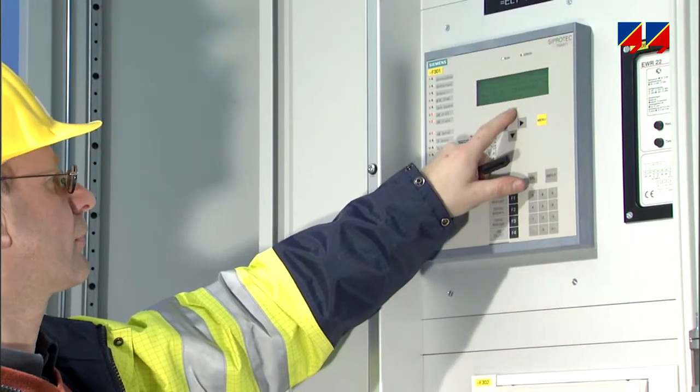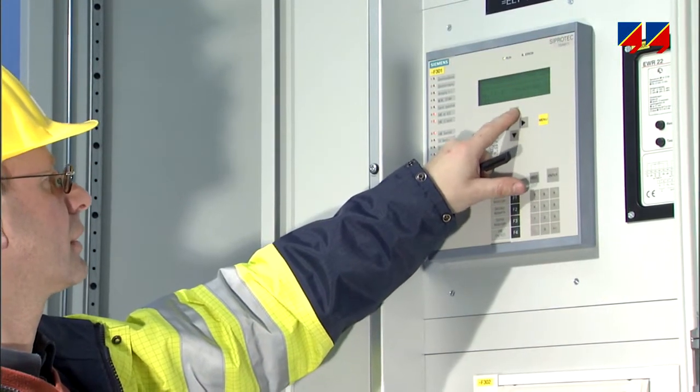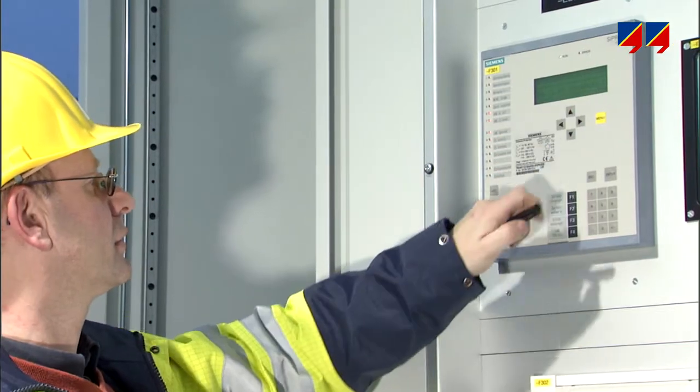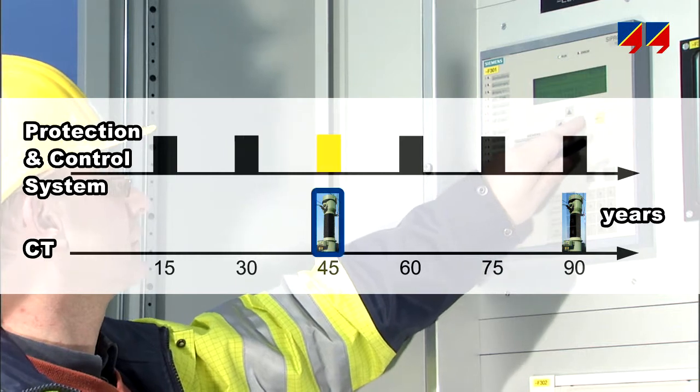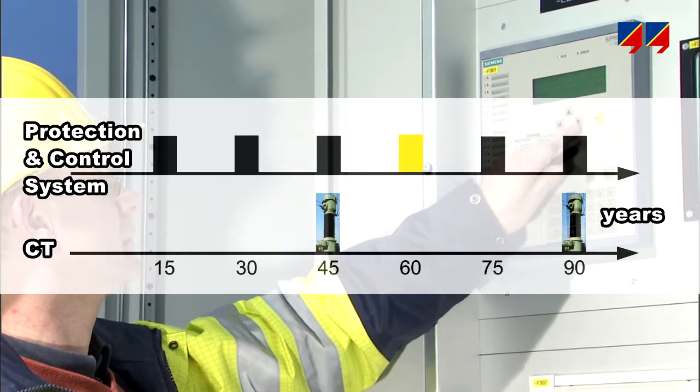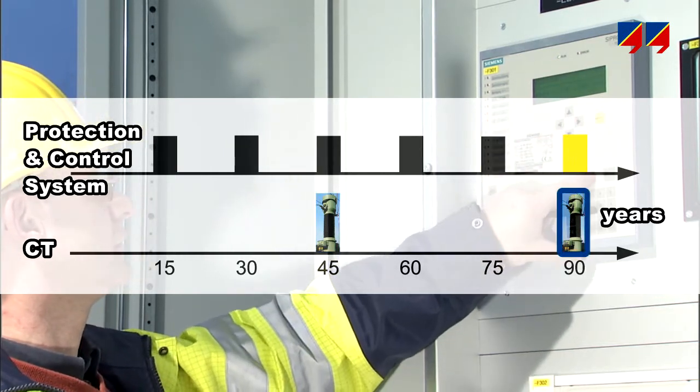CT circuits are rechecked when a plant is modified, for example, when new protection and control systems are installed. These systems have shorter life cycles than a CT, so such changes may occur several times during its lifetime.